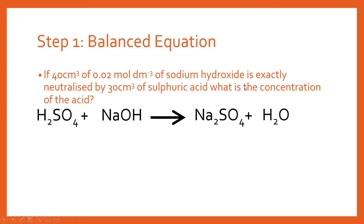So our first step is we need to get a balanced equation, and this is one of the places where it's important to take note of the H₂ — this is partially going to take care of the diprotic nature. We obviously don't have a balanced equation here, so we need to balance it. Sodiums are not balanced, so we need a two. By doing that, we've added hydrogen here, which unbalances that as well, so we need a two there to end up with a fully correctly balanced equation.